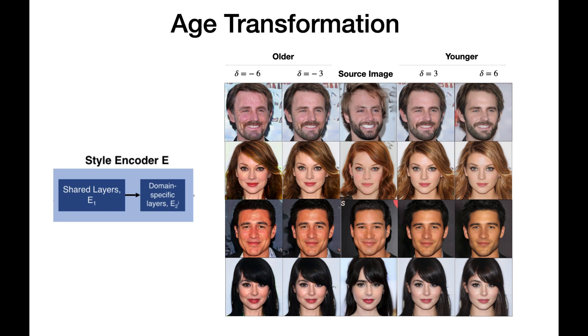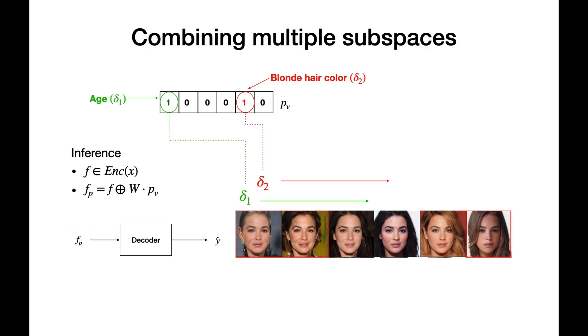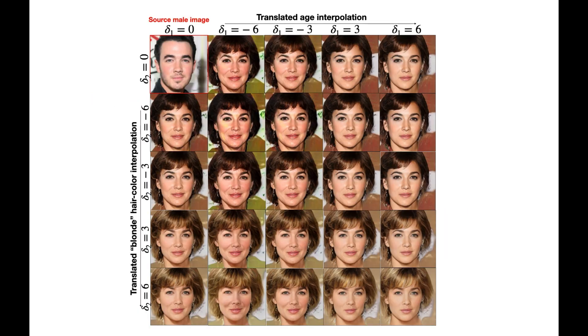The design of the style encoder allows us to achieve self-domain translation. We use this property for the age transformation task. It is also possible to combine multiple subspaces by passing different scalar values to the partition vector.